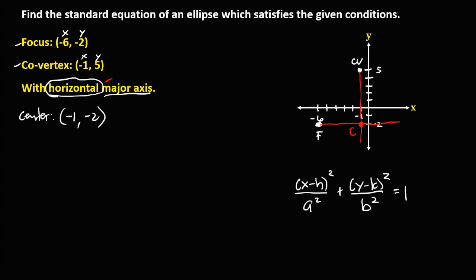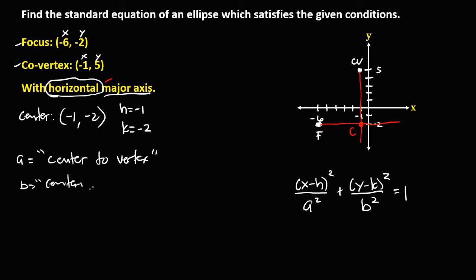From the coordinate of the center, h is equal to negative 1 and k is negative 2. To solve for a: since a goes from center to vertex and no vertex is given, we cannot solve for a directly. So let's solve first for b, where b goes from center to co-vertex.